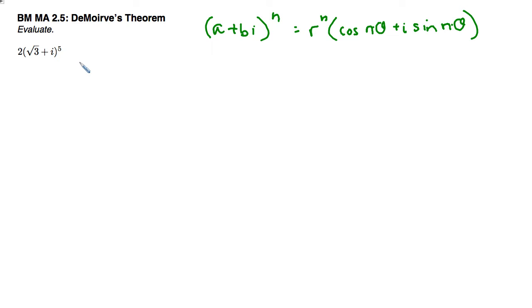So the first thing we need to do here is find our r and theta. Our r is really just the absolute value or the distance this complex number is from zero. So the square root of 3 squared plus 1 squared is going to give us square root of 4, which is 2. So our r is 2, and that's just the distance from zero, the origin.